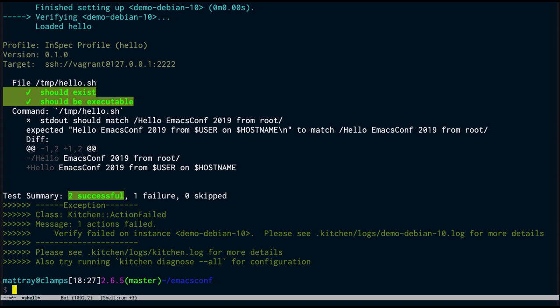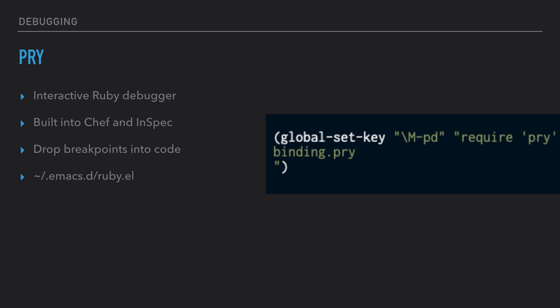So how are we going to fix that? I've got this interplay between Emacs with Tramp on my Vagrant instance, copying and pasting code from my shell into my scripts. I've got this nice fast feedback loop between InSpec and Chef. But at this point I'm probably going to need to look in a debugger. The reason I mentioned that InSpec and Chef are both Ruby DSLs is that Ruby has a really great interactive debugger called Pry. Pry support is built into both Chef and InSpec. You can drop a breakpoint into your code, and I've got a little snippet in my ruby.el that inserts 'require pry; binding.pry' with M-P-D.